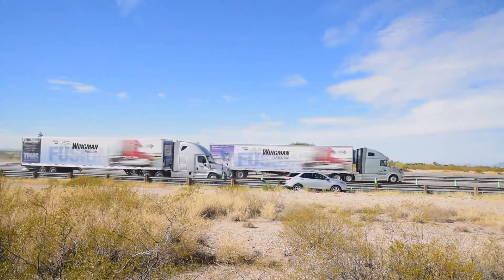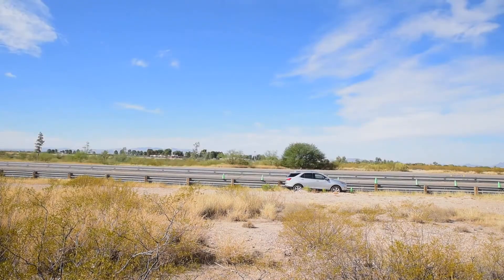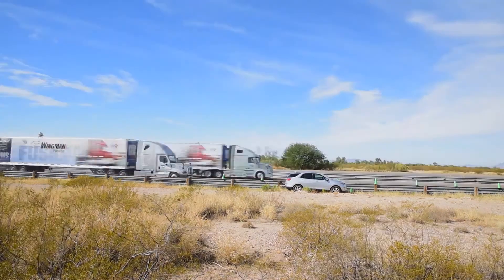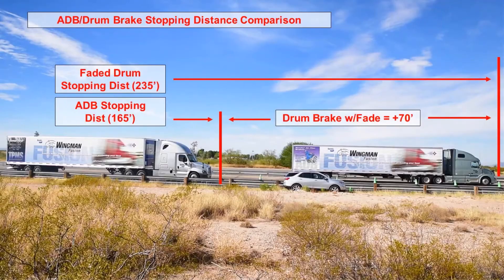Eventually, you'll see the drum brake vehicle fade to the point where a complete 6x4 tractor and 53-foot trailer have collided with our parked car. Throughout this video, the drum brake stopping distance varied from 20 feet to 70 feet greater than the air disc brake stopped location, where the air disc brake vehicle reliably stops behind the parked car and consistently stays within the 10-foot zone, virtually eliminating the impact of fade.